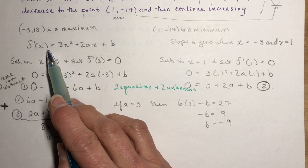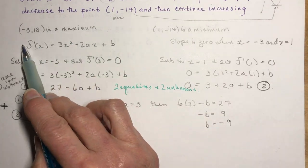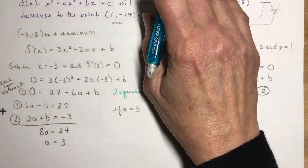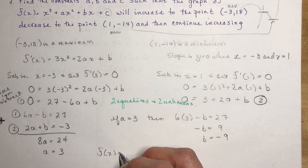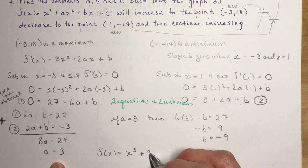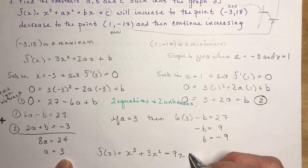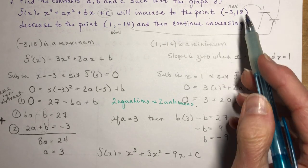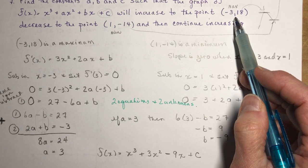Now looking back up here, when I took the derivative, I eliminated the c. So this derivative function isn't going to help me find c. I'm going to have to resort back to the original function. So I know that f(x) = x³ + 3x² - 9x + c. So how am I going to figure out c? Well, I have two points here. These are points on the graph.